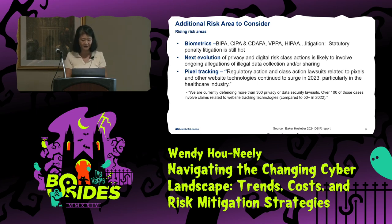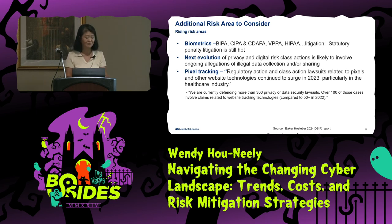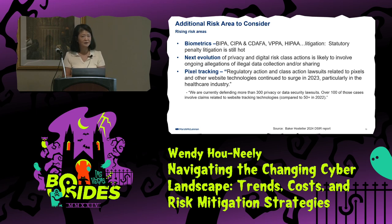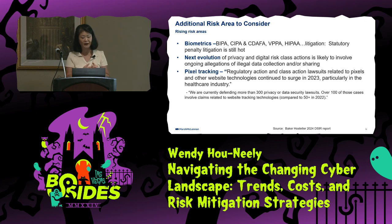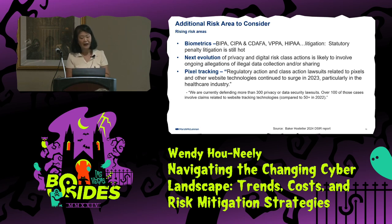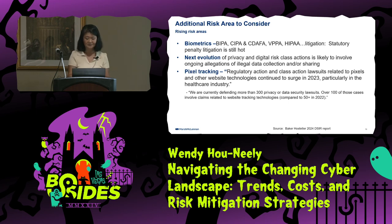Additional risk areas that are coming up now: biometric data, BIPA, HIPAA — the alphabet soup of litigation is all coming up a lot. The next wave we're seeing is digital risk class actions involving allegations of illegal data collection and sharing. The LLM model is hungry for data — collecting and sharing data and building models for AI. We're also seeing pixel tracking come up a lot, especially in healthcare, where they're alleging that patient pixel data is being collected to look at what kind of health issues they have. That's leading to lawsuits.